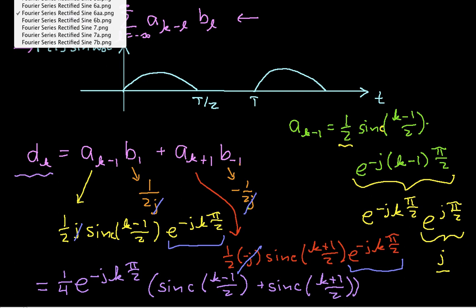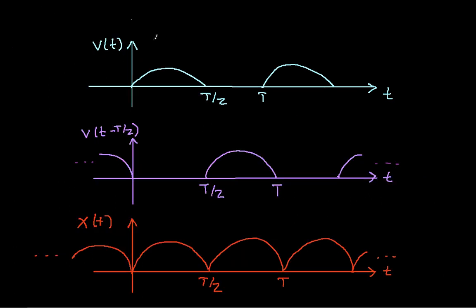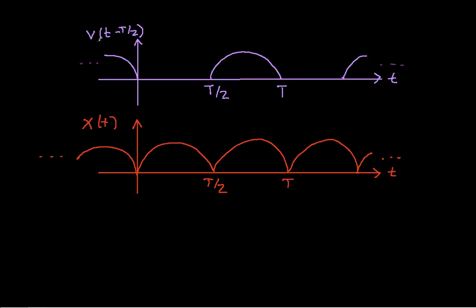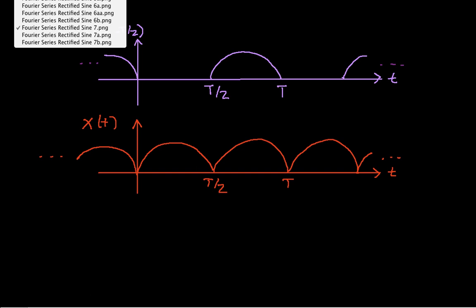So the next step in working the problem: we now have the Fourier series coefficients for v of t. Now we need to time shift v of t by half a period, and that will give us basically the half of the waveform that we don't have now. Then we just add everything together and we're done. Let's look at time shifting v of t and see what that does to the Fourier series coefficients from the time shift properties.